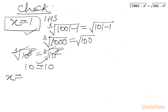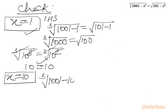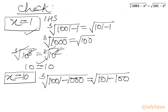Now for x equal to 10: LHS is cube root of (1001 minus 10 cube) equals cube root of 1, and RHS is square root of (101 minus 10 square) equals square root of 1. So 1 equals 1. Hence this is also verified.